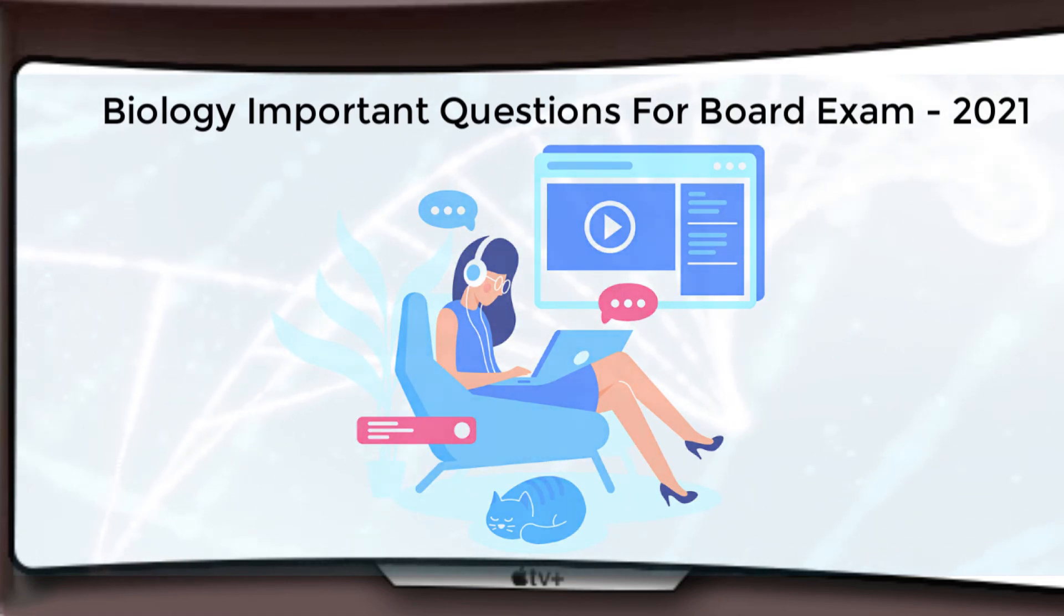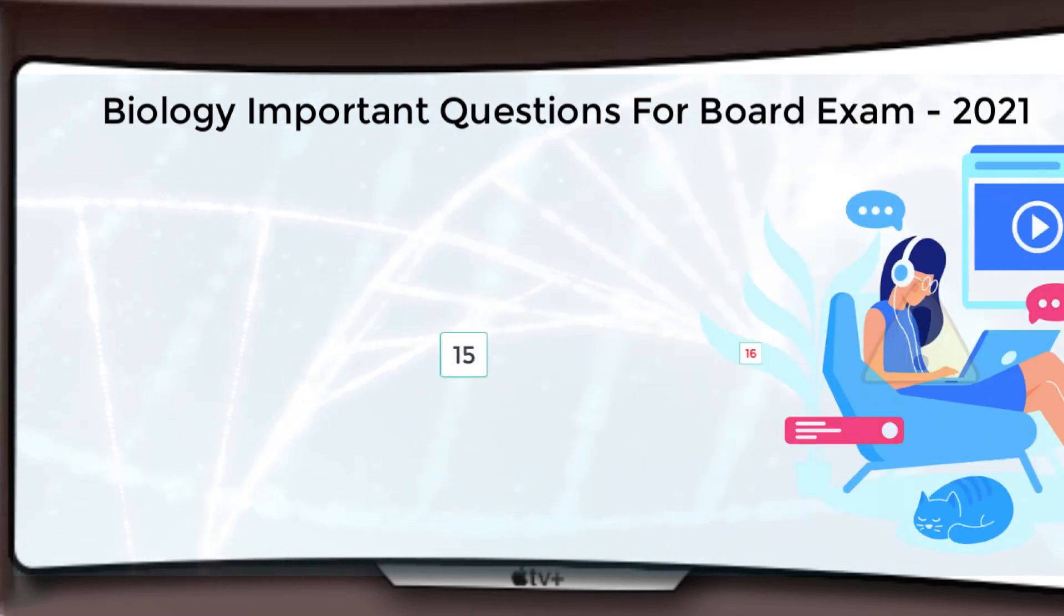In a nutshell, if I will let you know, in the second unit Genetics there are only two chapters. First is Principle of Inheritance and the second one is Molecular Basis of Inheritance. Both the chapters are important ones. And it consists of 15 to 16 marks of your paper. So you have to prepare accordingly.